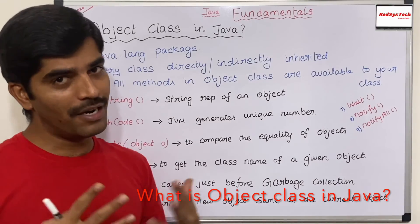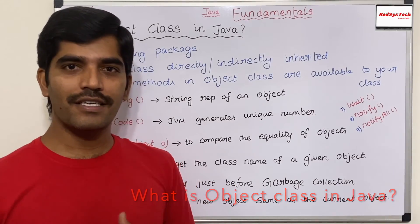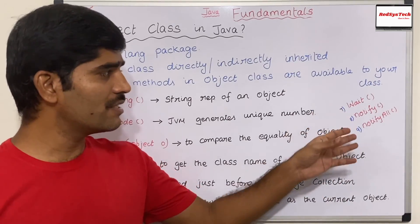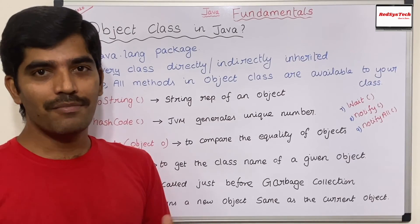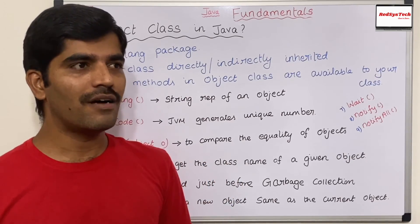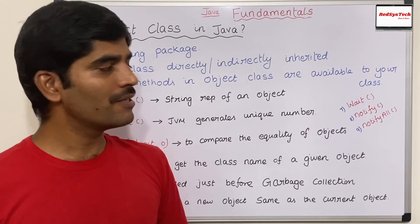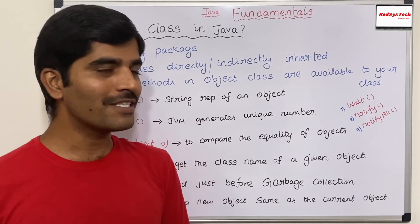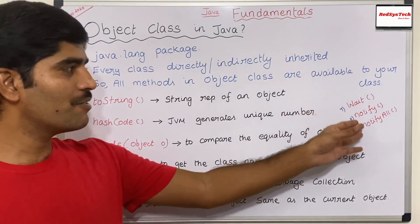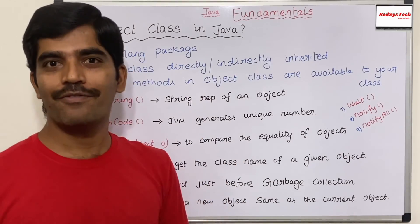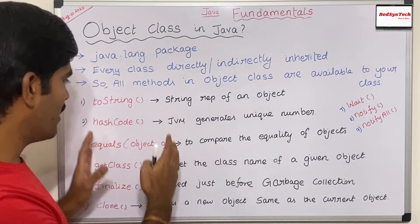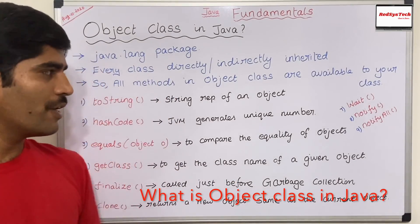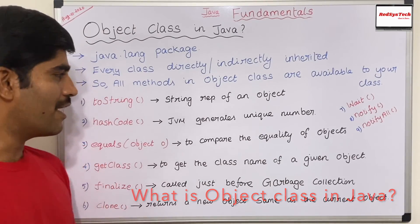There are three more special methods: wait, notify, and notifyAll. These methods are mainly used in a multi-threading or concurrency environment. I have a detailed explanation of all these methods in the multi-threading concepts section, coming up in future videos in this series. It is a very detailed context where I will explain all of these methods in and out.